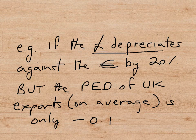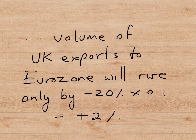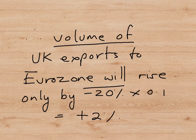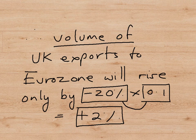If the pound depreciates by 20%, our exports will become 20% cheaper for foreigners to buy. But imagine that the price elasticity of demand of UK exports is very inelastic — imagine it's only 0.1. If the price has dropped by 20% and the PED is only 0.1, then multiplying 20% by 0.1 gives us 2%. This means that Europeans will only buy 2% more of UK exports, even though the currency has depreciated by 20%.